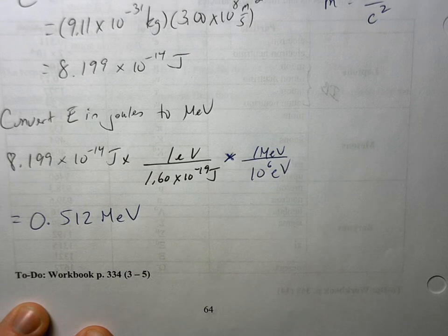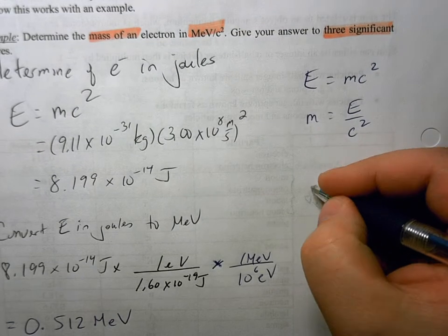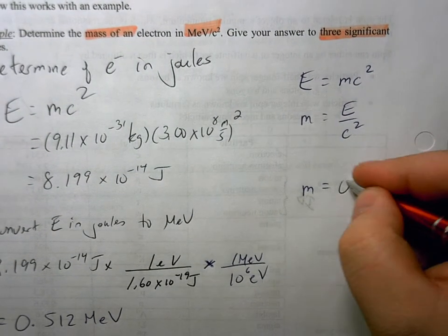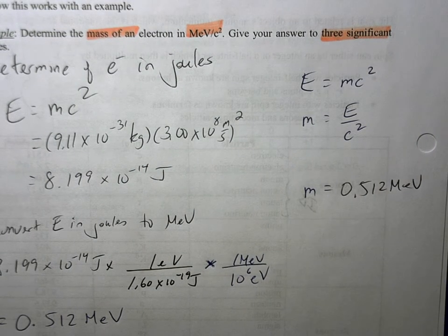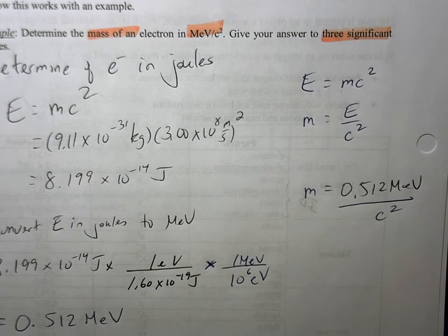But we're just going to actually leave the C squared alone. We're not actually going to plug in the value of C and we're not going to square that. All we're going to say for this is the mass is equal to that 0.512 Mega Electron Volt divided by C squared.